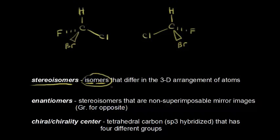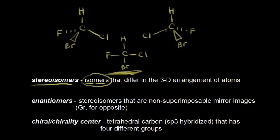What kind of isomers are they? We've talked about structural or constitutional isomers before, but we can't classify these as structural isomers. If we draw a dot structure leaving out the stereochemistry — just a carbon bonded to a hydrogen, a fluorine, a bromine, and a chlorine — that structure could represent either of these two molecules. They're all connected in the same way, so you can't say they are structural isomers. You have to say they are stereoisomers: they differ in the three-dimensional arrangement of atoms around that central carbon.